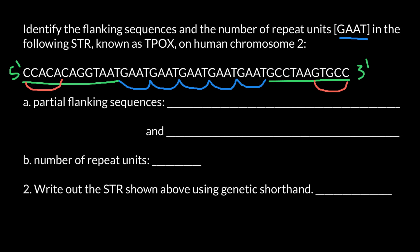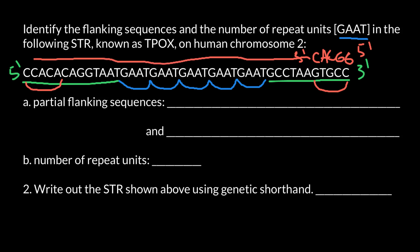So our primer would be, for example, here: G, G, G, G, C, A, and C. So this is going to be the 5' end of the primer and the 3' end of the primer. The new strand of the DNA would grow in this direction.